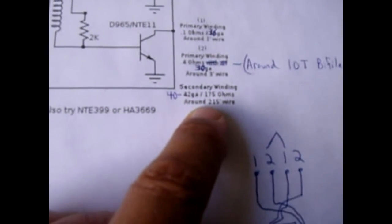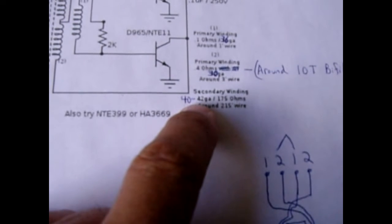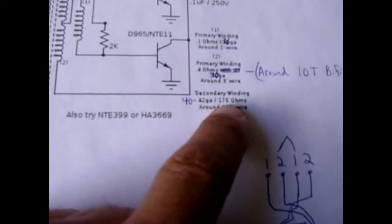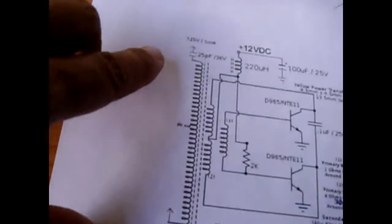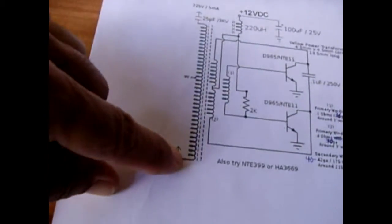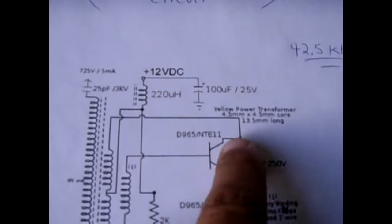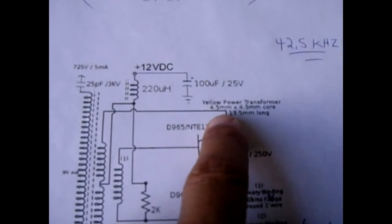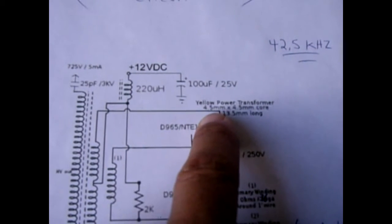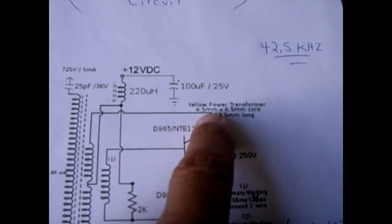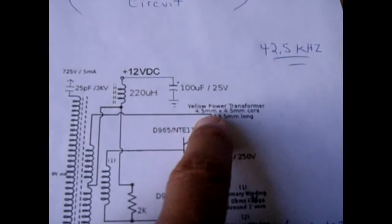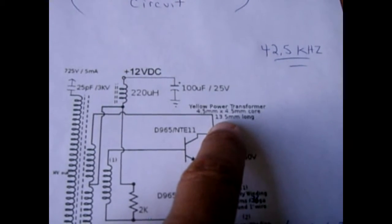The last winding is very simple, 40 to 42 gauge, and the resistance measures approximately 175 ohms. And you can add more if you want to get higher voltage. Now the ideal transformer is the little yellow power transformer I just showed you, and it's going to be four and a half to five millimeters square core, roughly 13 and a half millimeters long.